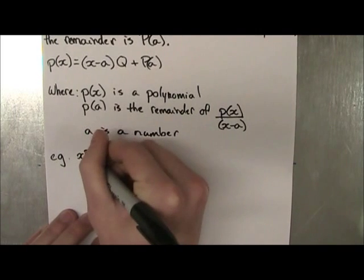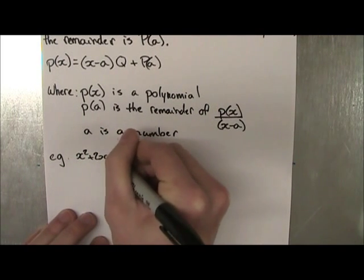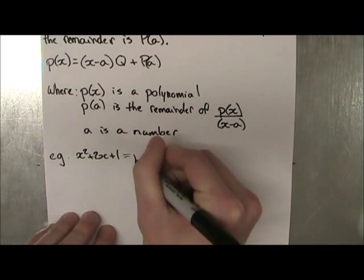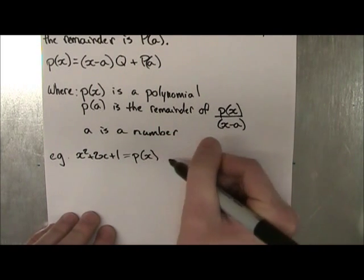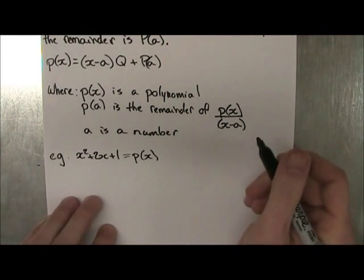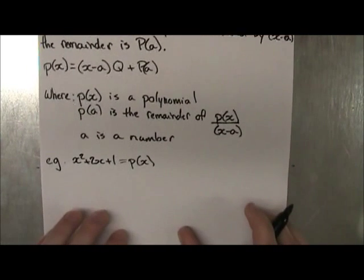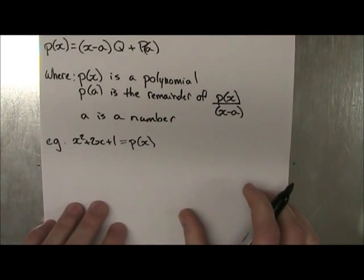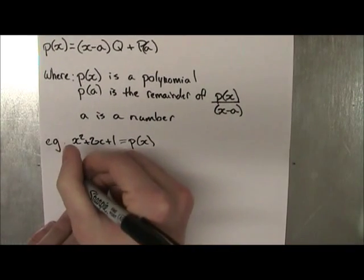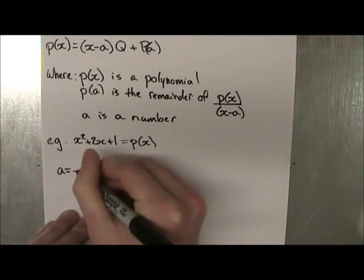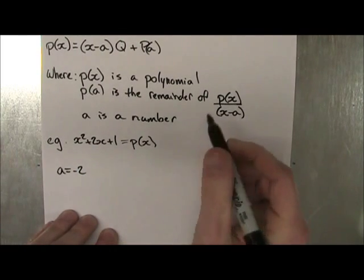Let's take x squared plus 2x plus 1. So we have this polynomial. This is our p(x) actually. And we want to divide it by some term or some expression to figure out what the remainder would be. So how about we choose, and like I said, a can be any number. So let's say a is equal to minus 2.